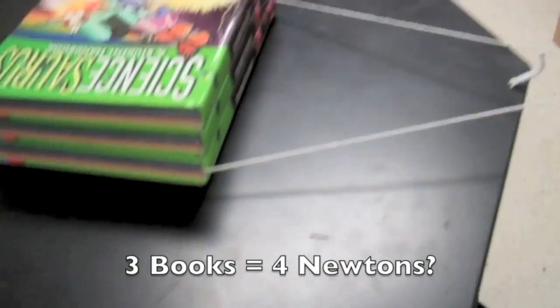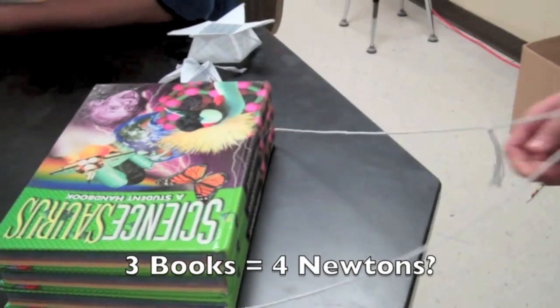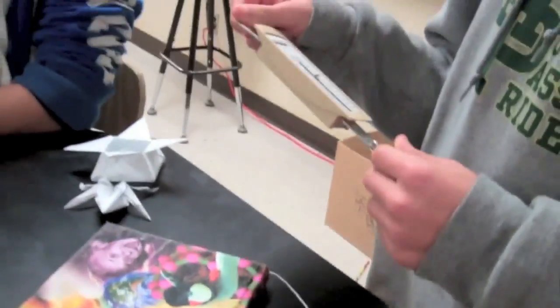Okay. What do you think's going on? The scale is measuring how many newtons it takes to pull each book on top of each other.